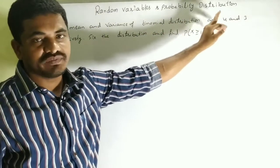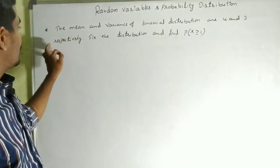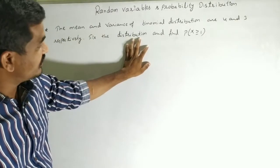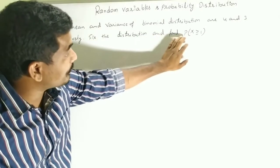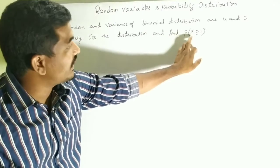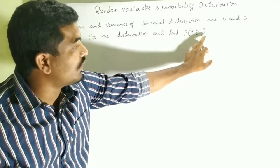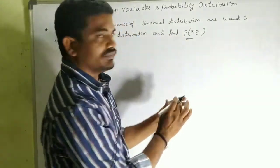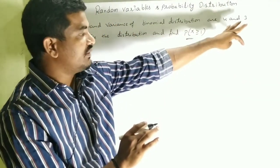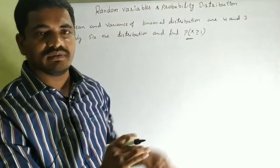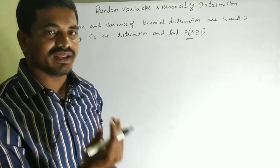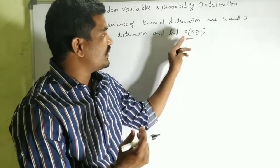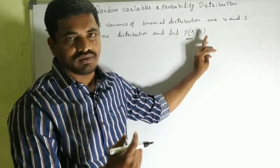Next question: The mean and variance of the binomial distribution are 4 and 3 respectively. Fix the distribution and find P(X ≥ 1).